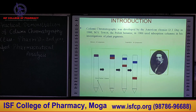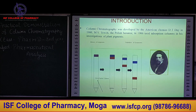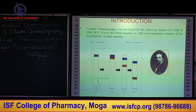Column chromatography was developed by American chemist D.T. Day in 1900 and M.S. Tswett, a Polish botanist, in 1906. They separated the chlorophyll and xanthophyll from green plants.